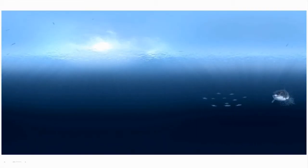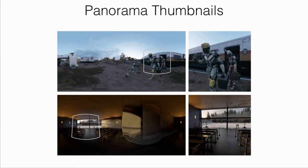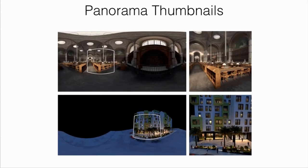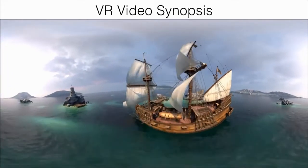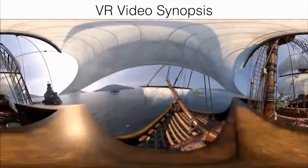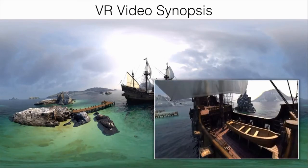In addition to predicting saliency maps for images in VR, we can also use our method to predict saliency for videos in VR. We can automatically generate representative thumbnails for panoramas. To do this, we predict a saliency map for the panorama, and then we find the window of maximum saliency. We can also use our predicted saliency maps to automatically generate a GIF preview of a VR video, where an algorithm uses the saliency map to find high saliency windows with roughly continuous content.